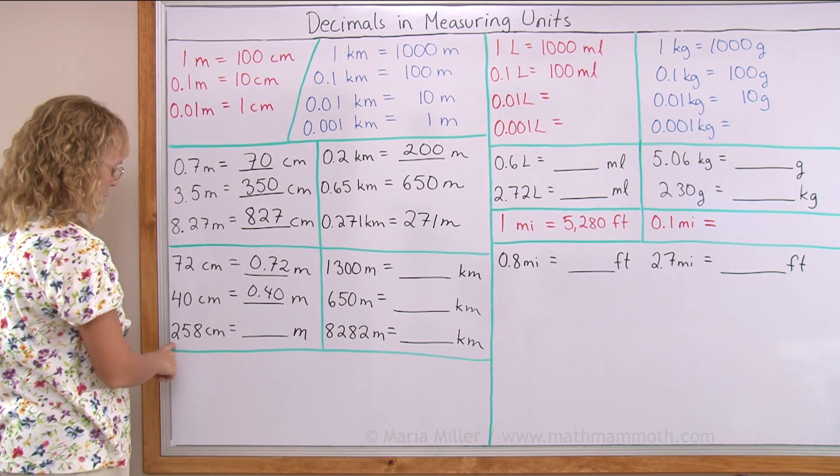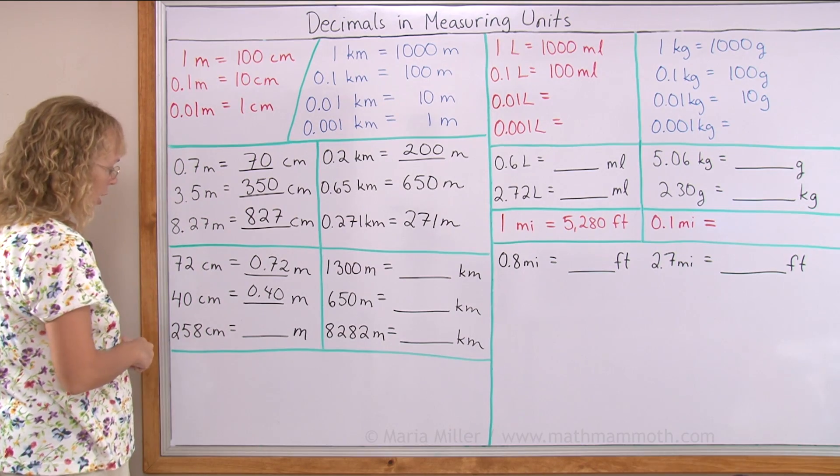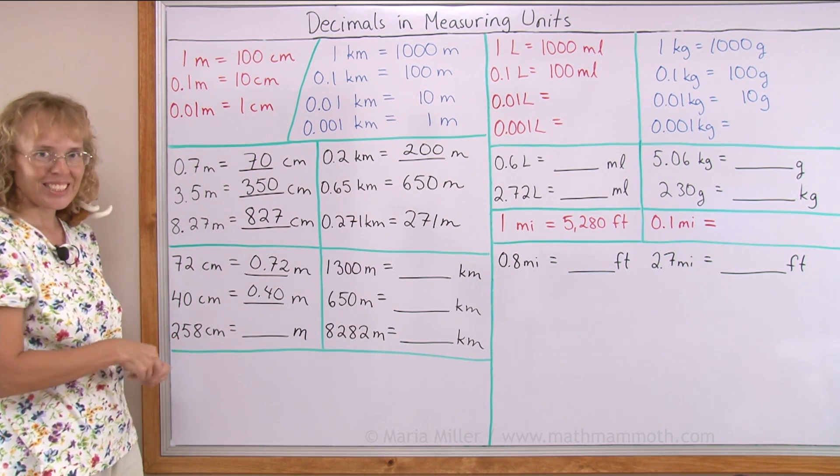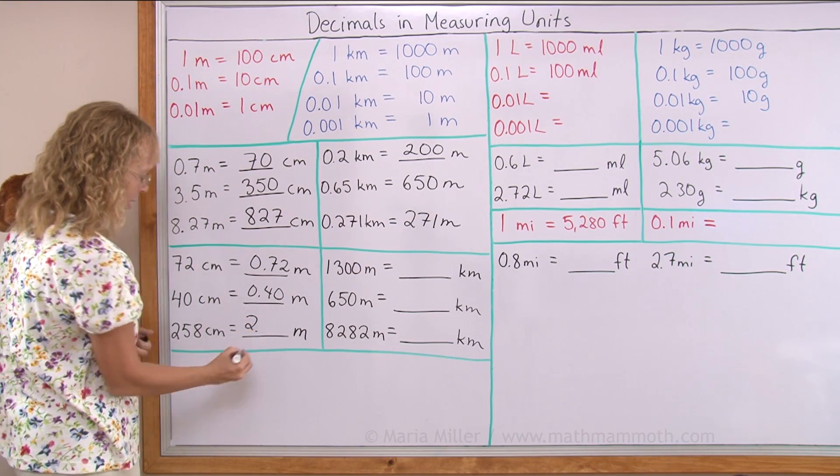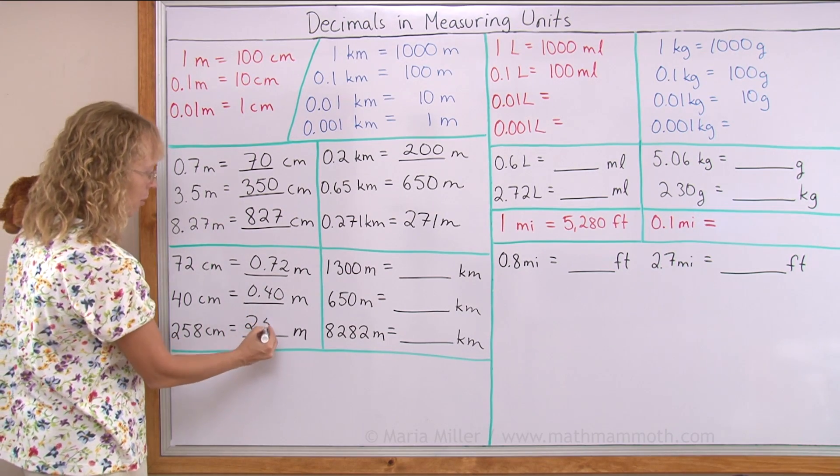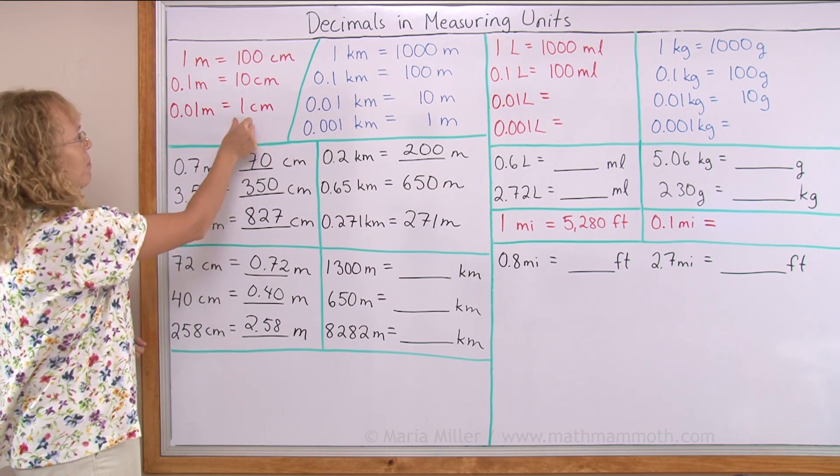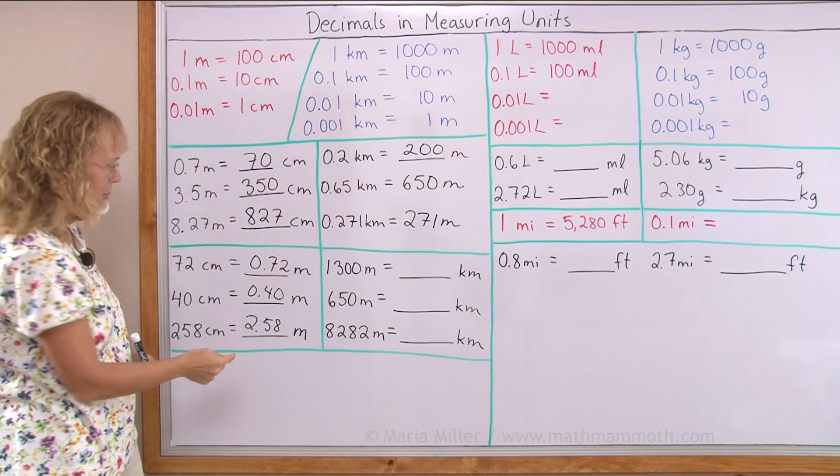And here 258 centimeters. Here we have more than a meter because these 200 centimeters makes two meters. And then these digits follow the decimal point. But it also makes sense because 58 centimeters is 58 hundredths of a meter.